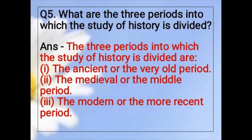Question number 5: What are the three periods into which the study of history is divided? Answer: The three periods are — number 1: the ancient or the very old period; number 2: the medieval or the middle period; number 3: the modern or the more recent period.